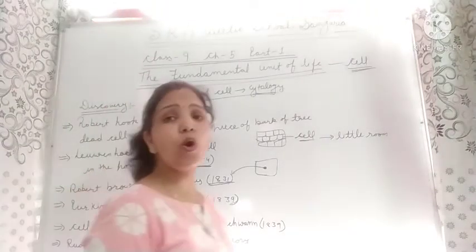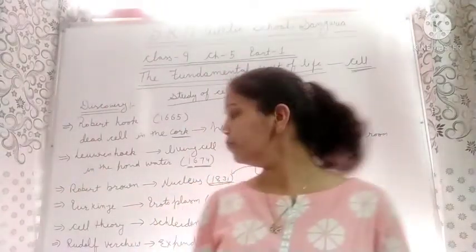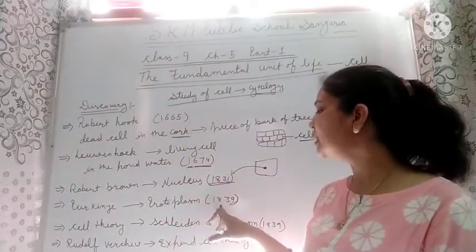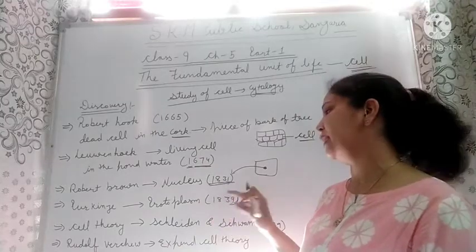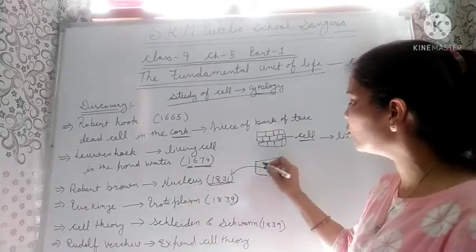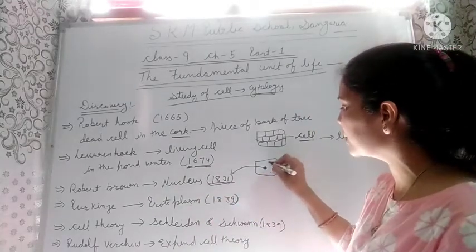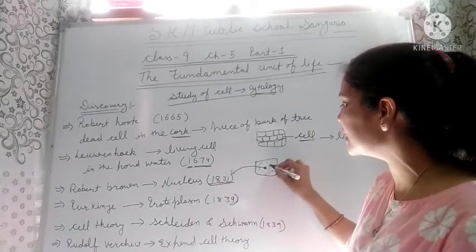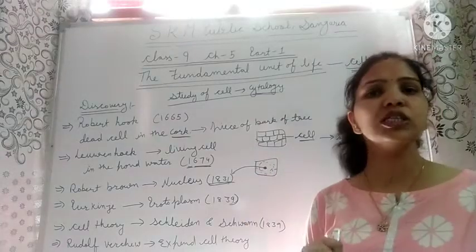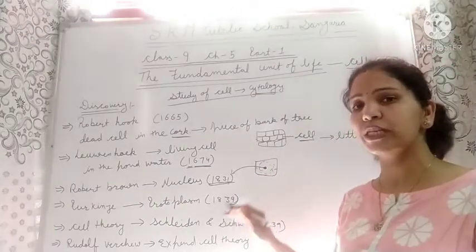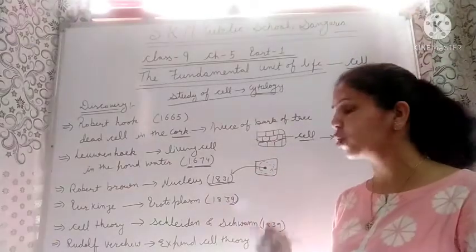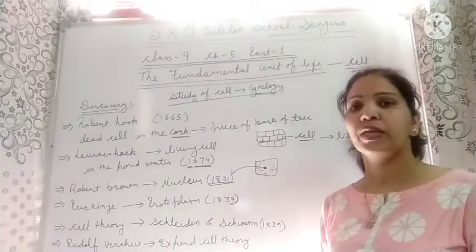Purkinje coined the term 'protoplasm' in 1839. Protoplasm is the fluid part that is present inside the cell.